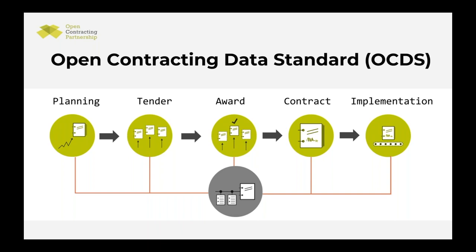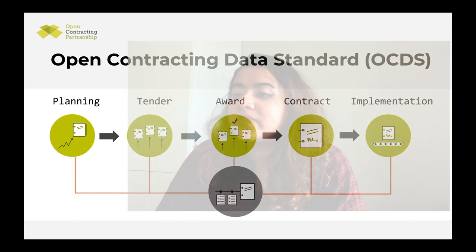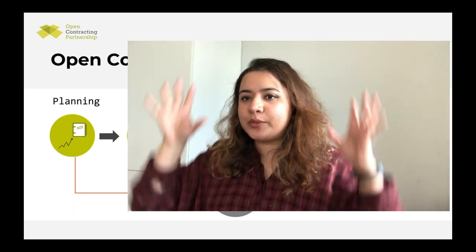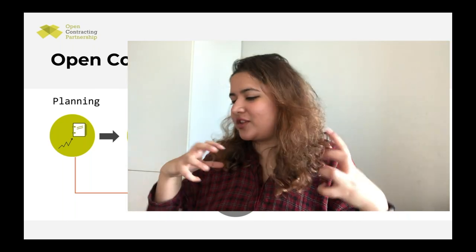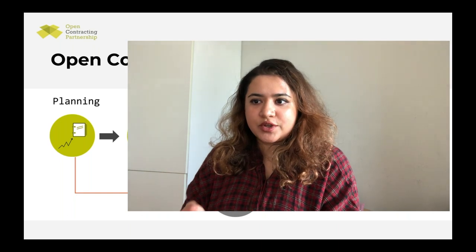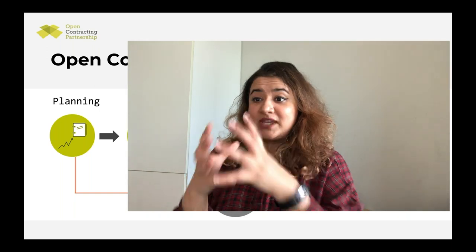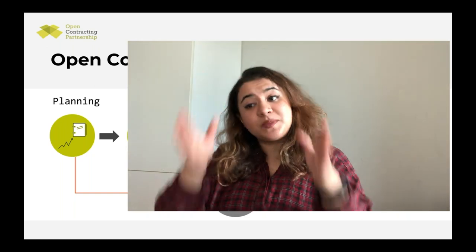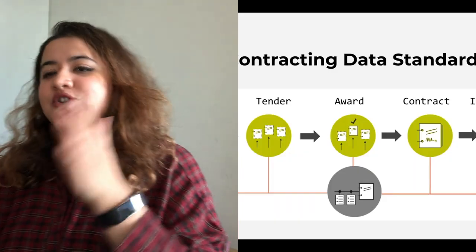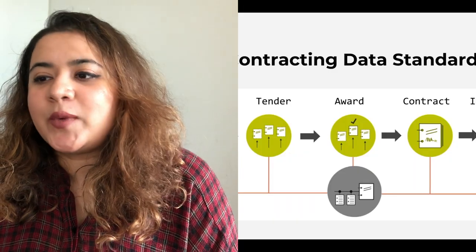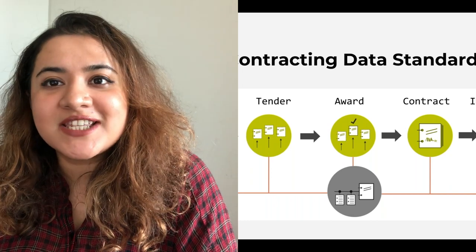The Open Contracting Data Standard, also known as OCDS, is a free, open, global data standard available at standard.opencontracting.org. When we talk about open contracting, we think of the public procurement process as five stages. The first is the planning stage, where there is a user need the government is responding to — for example, a hurricane requiring procurement of tents. Then comes the tender stage, where the government announces to the market what it wants and invites applications.